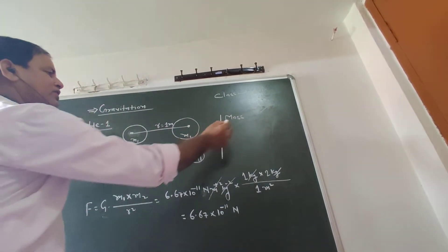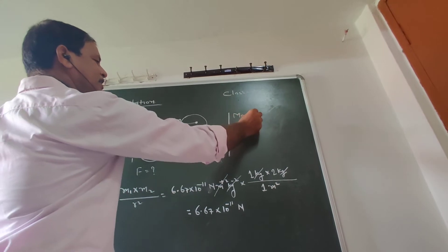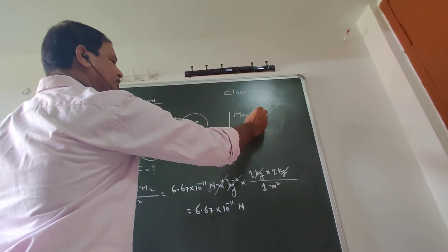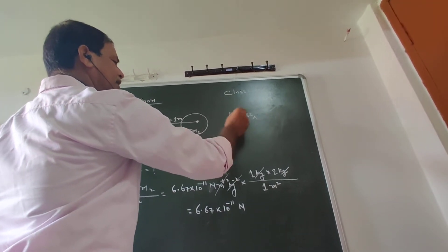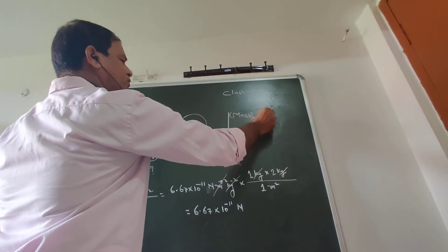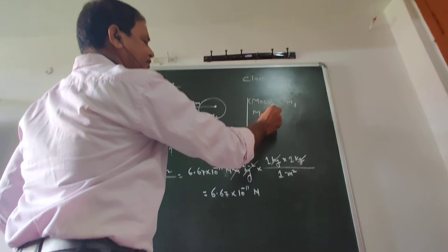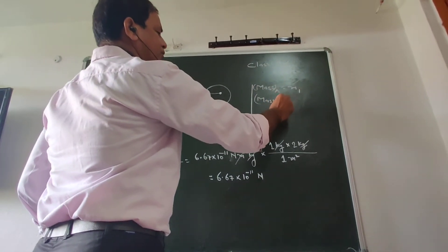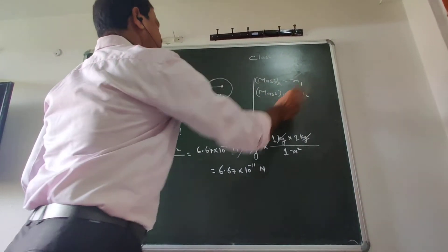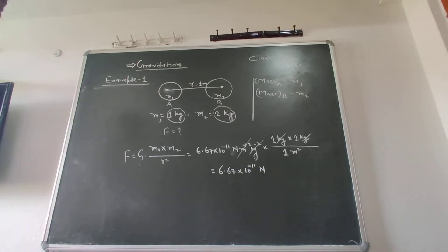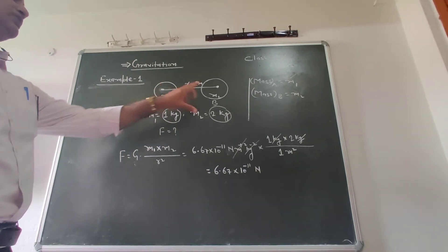It means the mass of A is equal to M1. If A is equal to mass of A, then M1 is equal to M1. Mass of B is M2. If A is equal to M1, the mass of B is equal to M2.